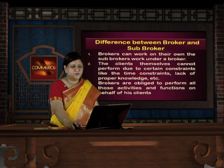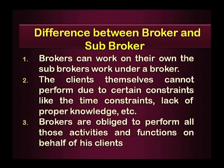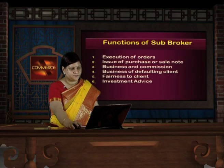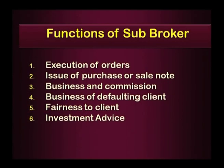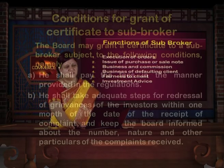What is the difference between broker and subbroker? Brokers can work on their own; subbrokers work under a broker. Clients themselves cannot perform due to certain constraints like time constraints or lack of knowledge, so brokers work for them. Brokers are obliged to perform all activities and functions on behalf of the client. The functions of a subbroker include execution of orders, issue of purchase or sales notes, handling business of defaulting clients, fairness to the client, and giving investment advice.